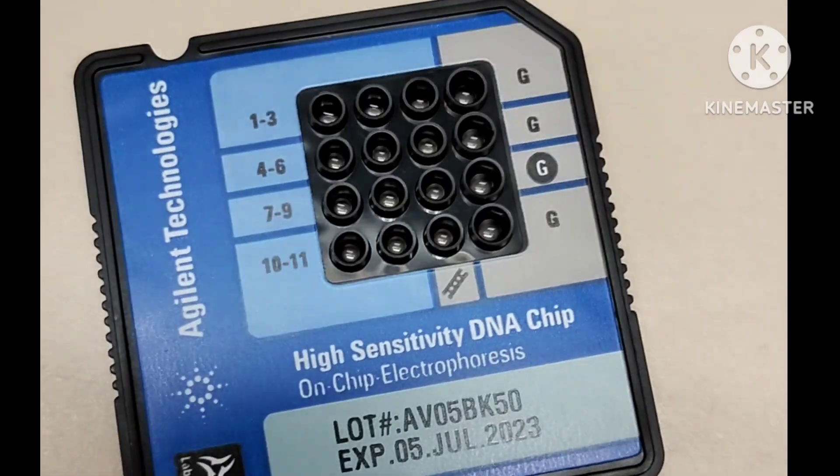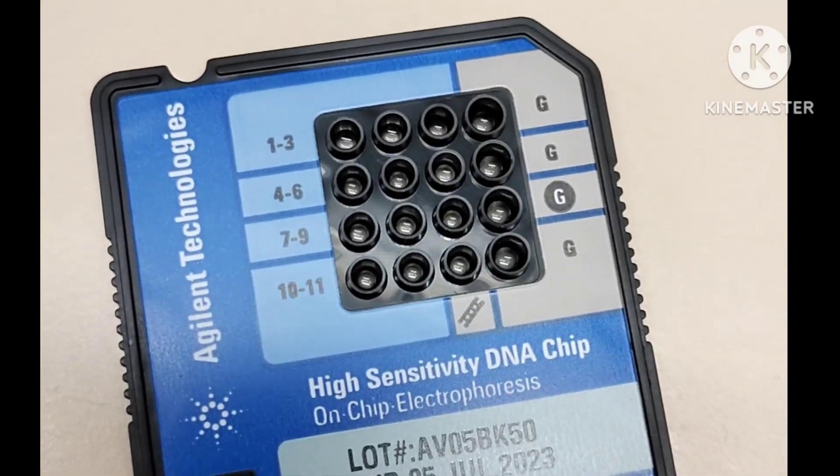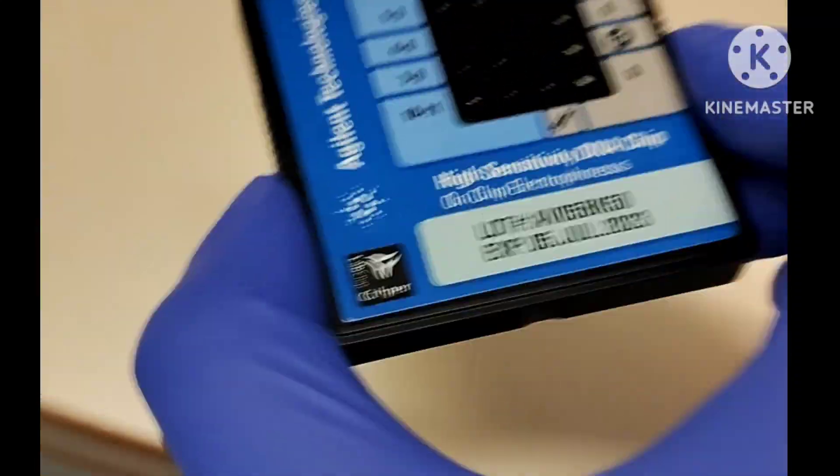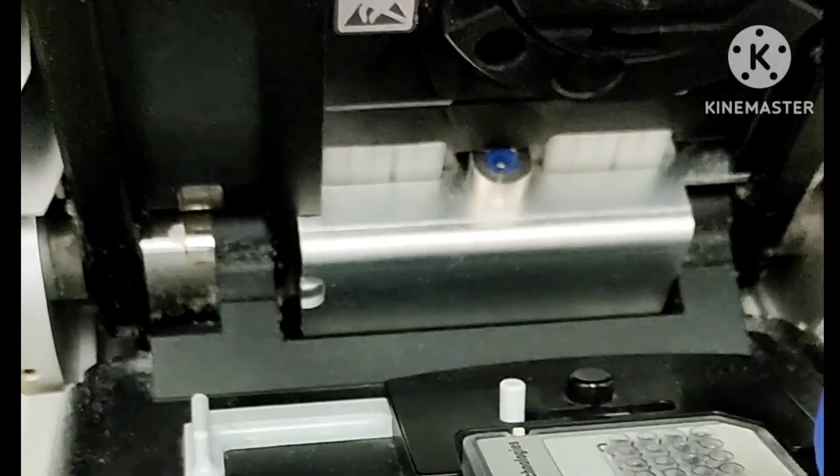After one minute, turn off the vortex and take out the chip. Make sure there are no bubbles—just check once. No bubbles. Take out the chip with nuclease-free water and add your new chip with sample.